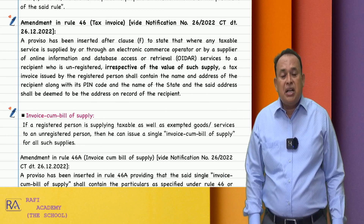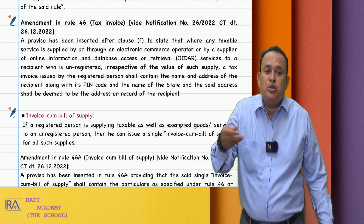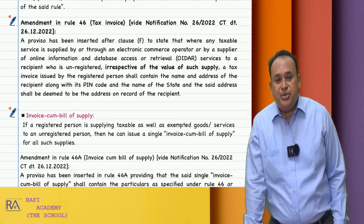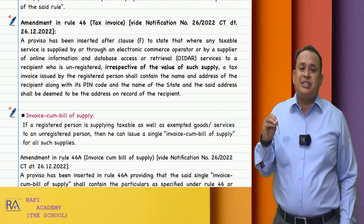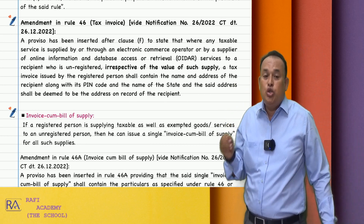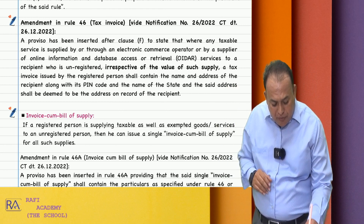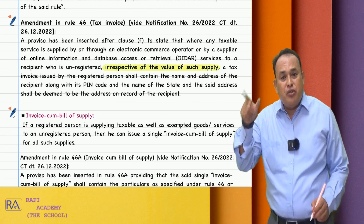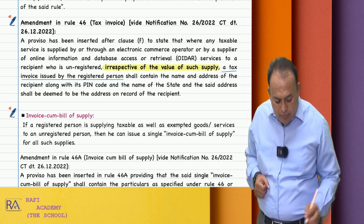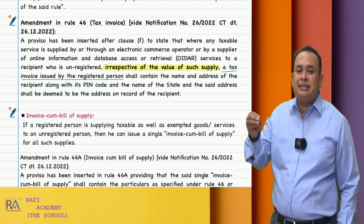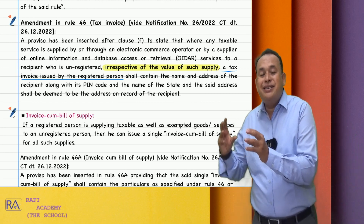To summarize what was mentioned before: consolidated tax invoice is sufficient to issue where the transaction value does not exceed 200 rupees when you supply to an unregistered person. However, it is relevant to note that if the supplier of service is an e-commerce operator or the supplier is an OIDAR service supplier supplying to an unregistered person, then in that case the value of supply is immaterial — irrespective of the value of such supply, what is required is a separate tax invoice issued by the registered person. That means separate tax invoices must be issued if the supplier is the e-commerce operator or if the supplier is the OIDAR service supplier to an unregistered person.